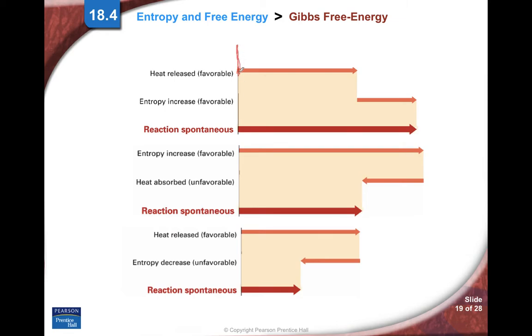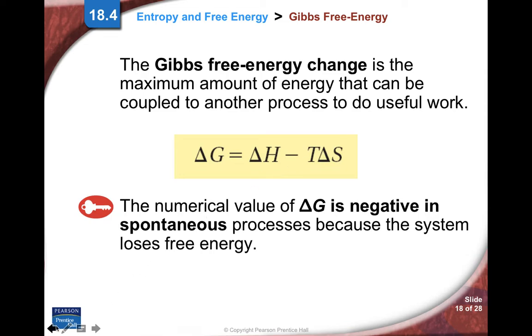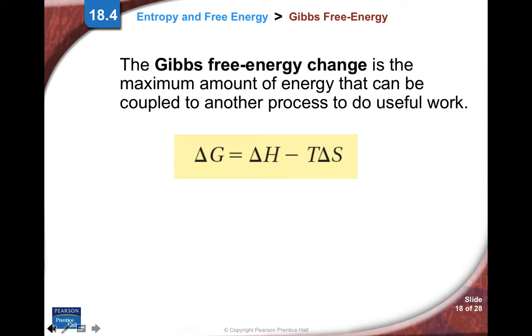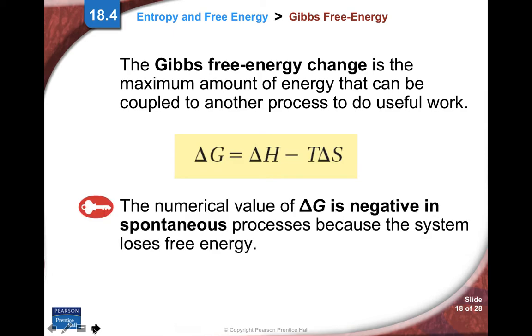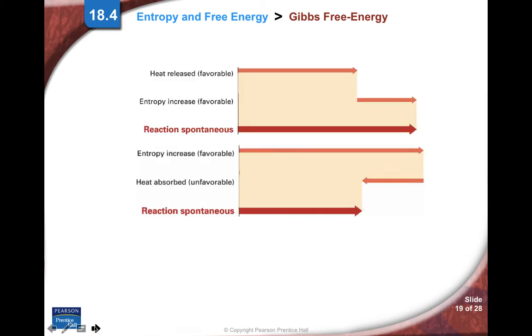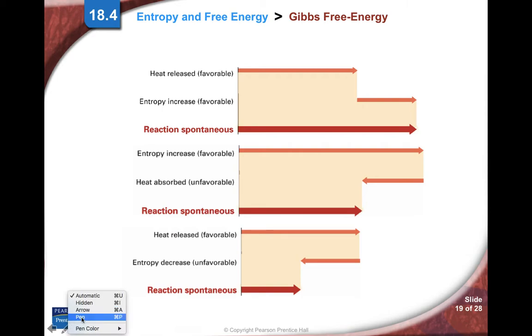First, this is zero for delta G. If that line is zero, situations below are spontaneous. That means the delta G is negative.